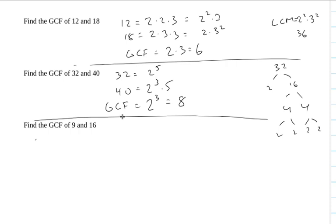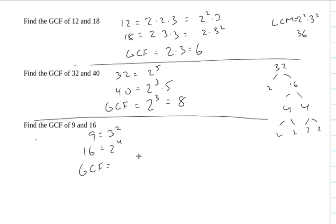If we want to find the greatest common factor of 9 and 16: 9 is 3 squared, and 16 is 2 to the 4th. Looking through the individual bases, 2 does not occur in 9 and 3 does not occur in 16, so they don't have anything in common. The greatest common factor is actually 1 — that's the largest number that will evenly divide both of them.